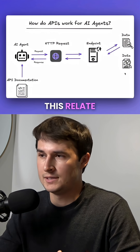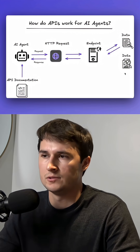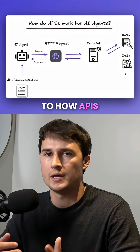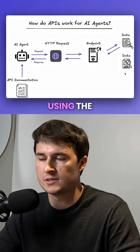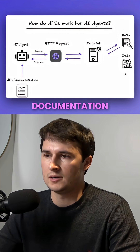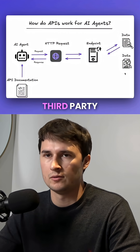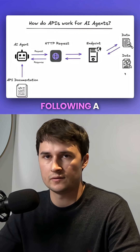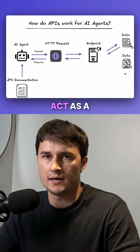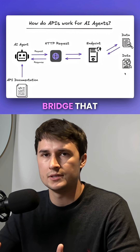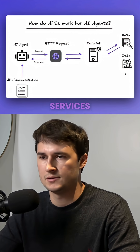Now how does this relate to APIs? Well, this kitchen analogy is very similar to how APIs work for AI agents. AI agents using the proper API documentation are able to retrieve data from third-party services following a similar process. These APIs act as a bridge that connects AI agents to external data and services.